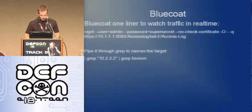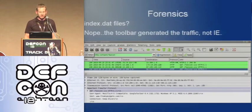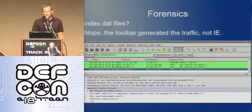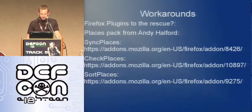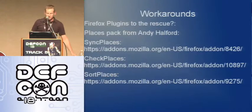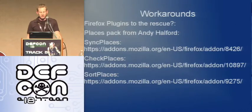If they have a Bluecoat proxy in place, they may run this little one-liner — I'll put this in here in case you don't already know about it — you can use this to get at traffic. And for index.dat files, we won't actually see anything, because it's not Internet Explorer that generated it; it's the Google toolbar itself, as you can see in the user agent. Are there workarounds for this situation? Well, there are some Firefox plug-ins that seem like they'd be helpful — there's a Places Pack from Andy Halford, Sync Places, Check Places, Sort Places.